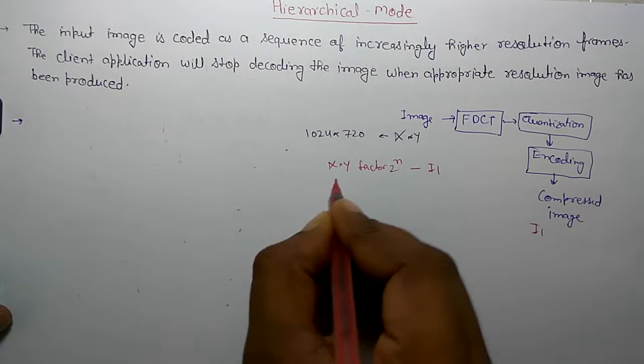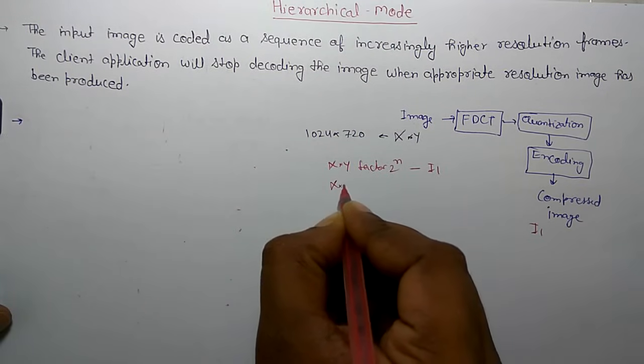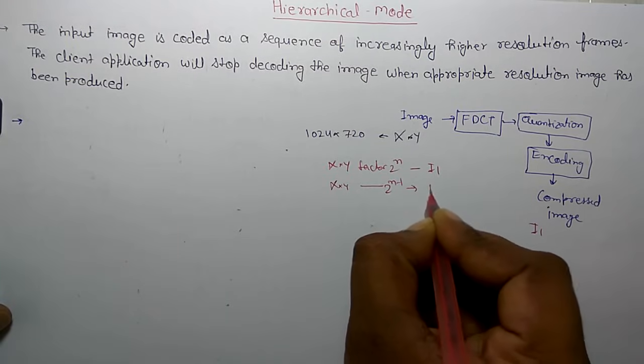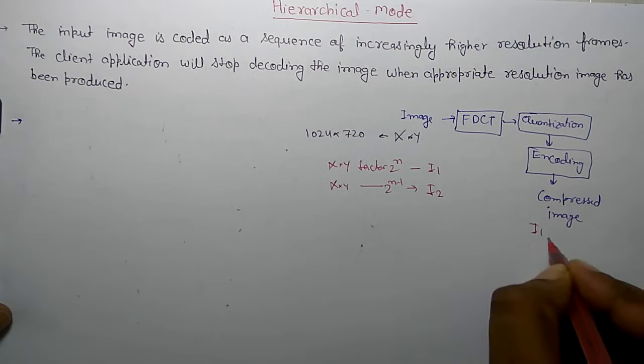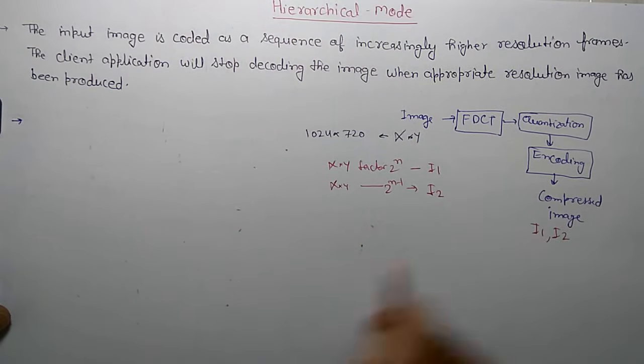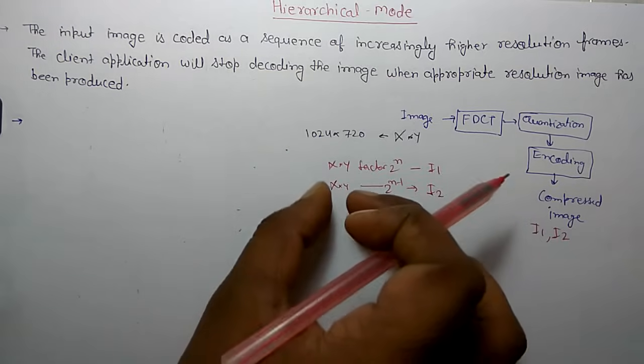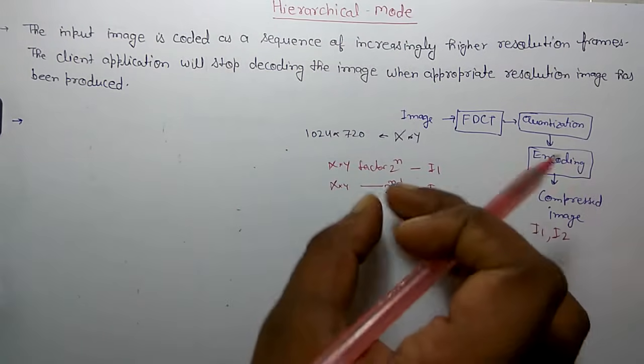Next time, factor 2 to power N minus 1. So your image generated by I2 has higher resolution. You keep increasing the resolution and compress images at different resolutions.